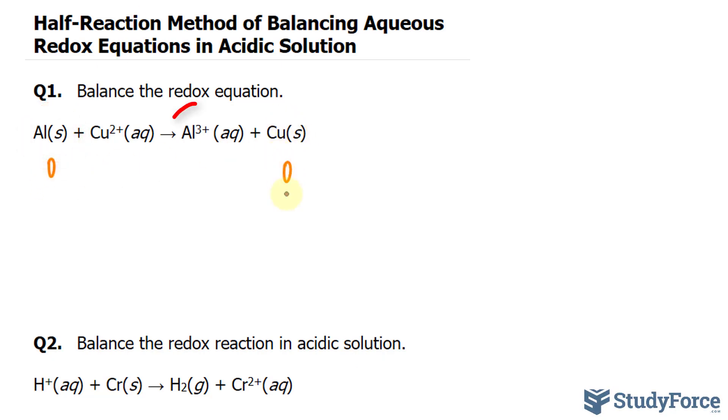Aluminum goes from solid aluminum to this cation, aluminum 3 plus. It is becoming positive, so it's losing electrons. When an atom loses an electron, then it's being oxidized. So the relationship between these two is oxidation.